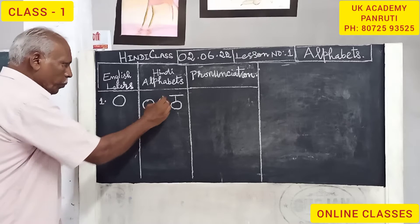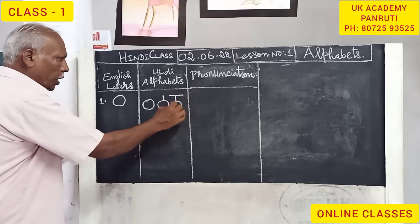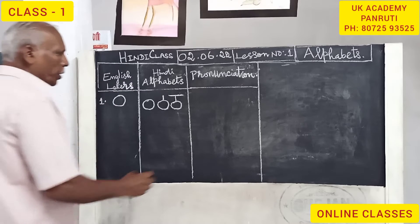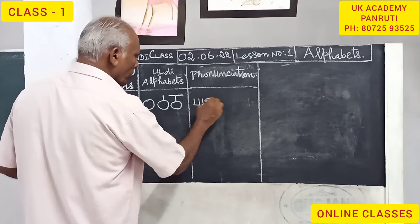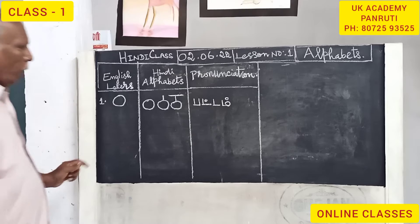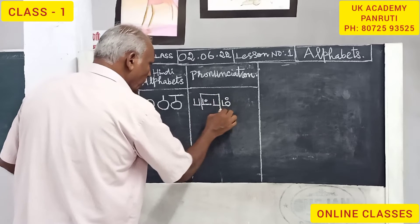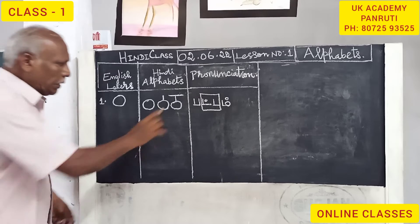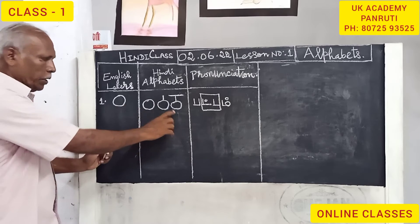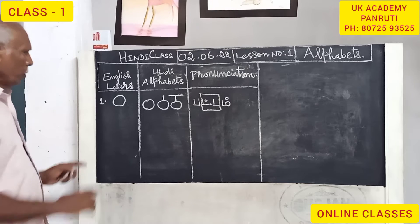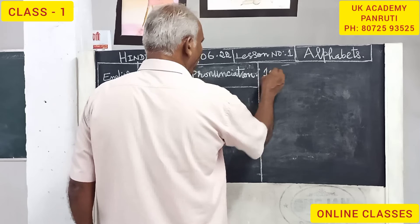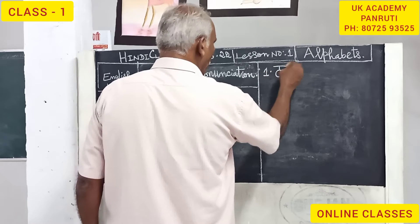First write O as it is, then put a small vertical line, then put the top line like this. In Tamil, we write Pattam, Sattam, Kattam — similarly in Hindi, take the word example given here. The word contains Itta — that is the pronunciation for this letter. This letter is called Itta. Now you have learnt a letter — from O, you have learnt a letter called Itta.